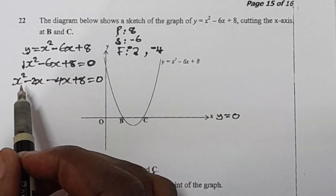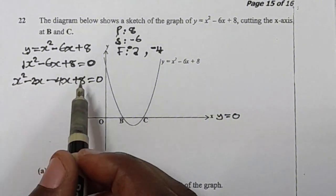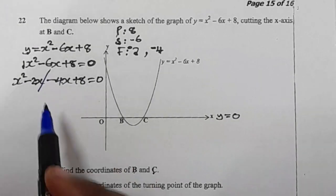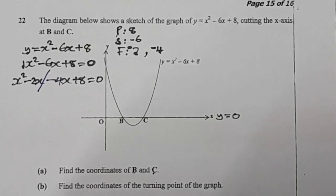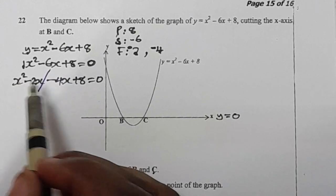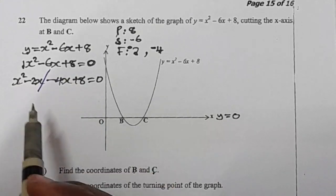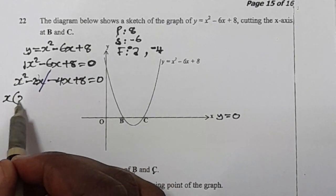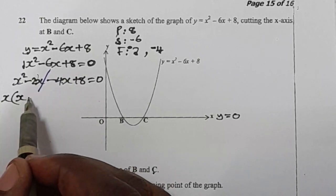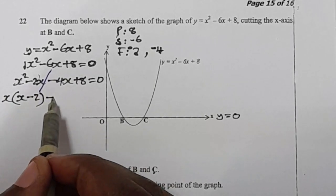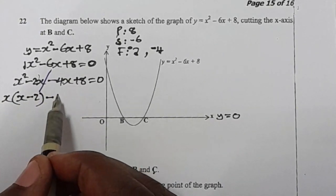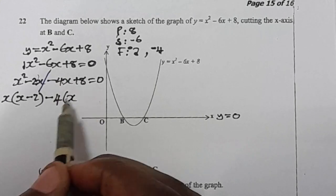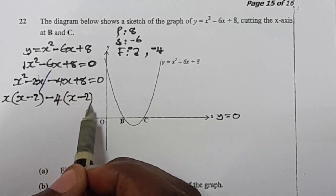We have 4 terms, and because we have 4 terms we are going to group them into 2s and pair them, so that we factorize the first two terms and then the second two terms. What is common in the first pair is x: x squared divided by x is x, and negative 2x divided by x is minus 2. Then what is common in the second pair is 4: negative 4x divided by 4 gives x, and 8 divided by negative 4 gives minus 2. So we have x(x minus 2) minus 4(x minus 2) is equal to 0.